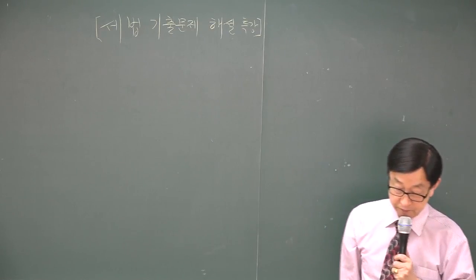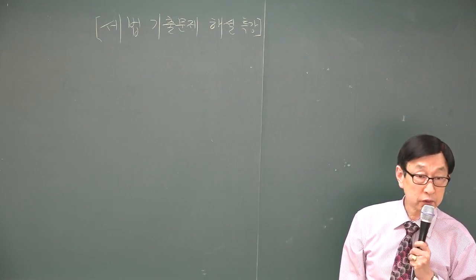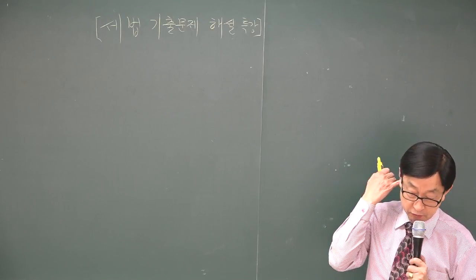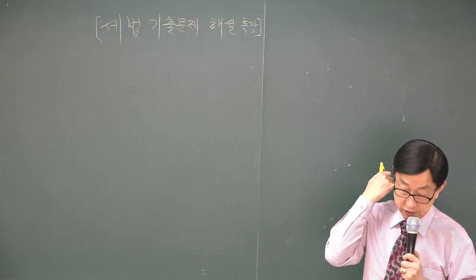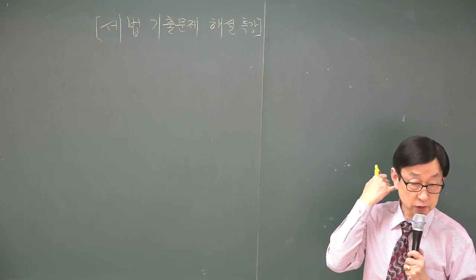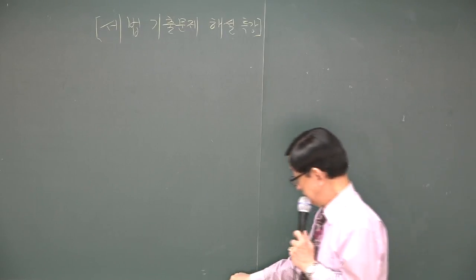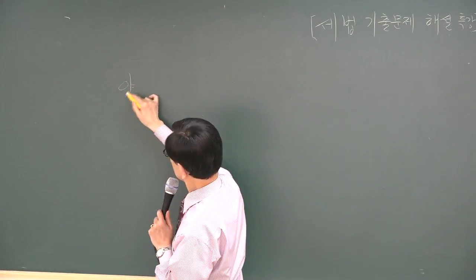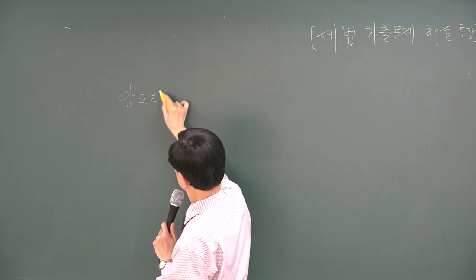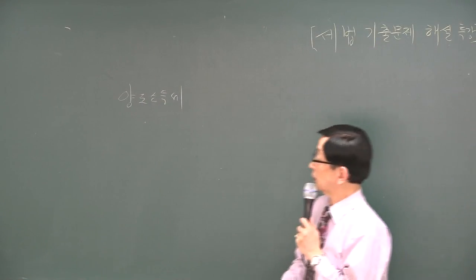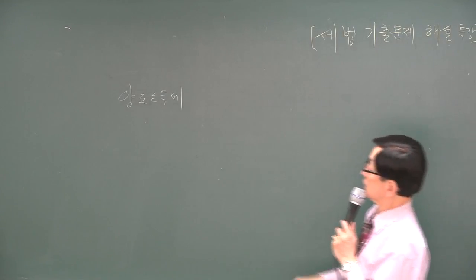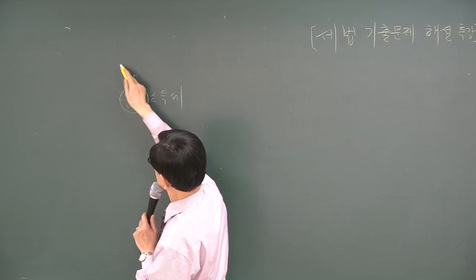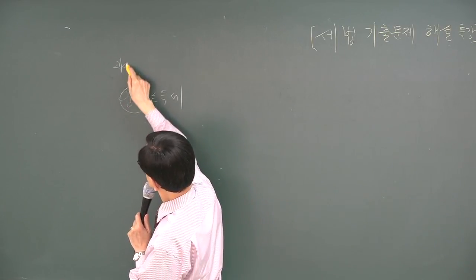양도소득세부터 나와 있는데, 소득세가 제일 중요합니다. 양도소득세 부분입니다. 차례대로 할게요. 양도소득세 하고 나서 다음 취득세 순서대로 하겠습니다. 양도소득세. 이 부분에서는 먼저 양도에 대한 과세대상이죠.